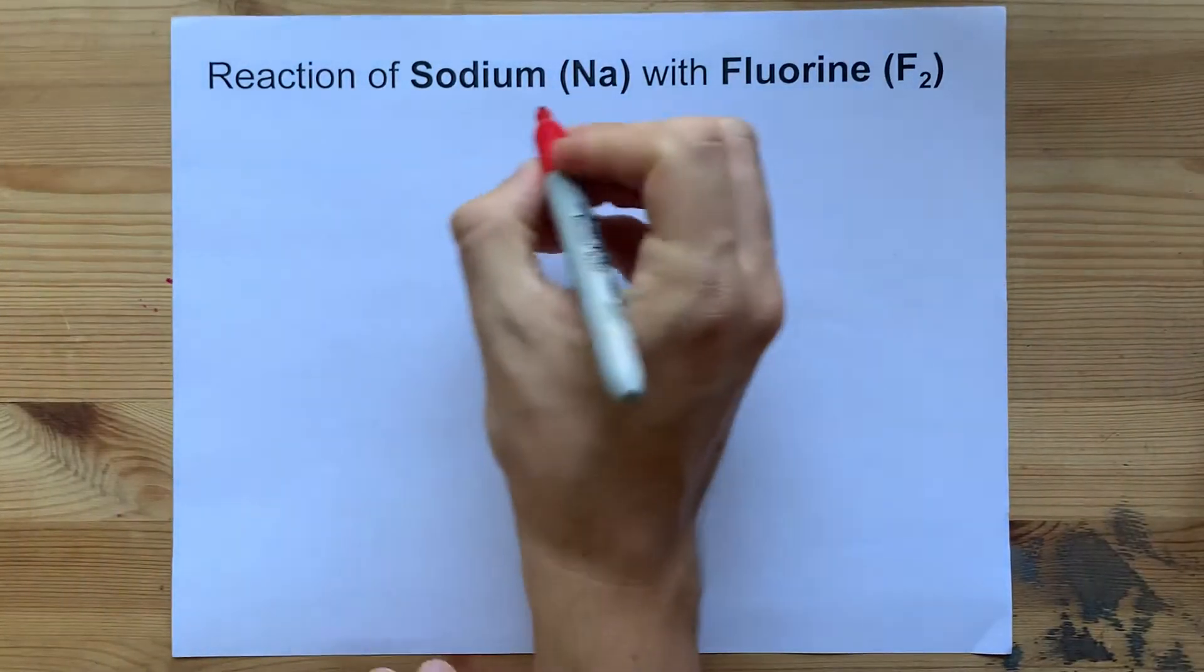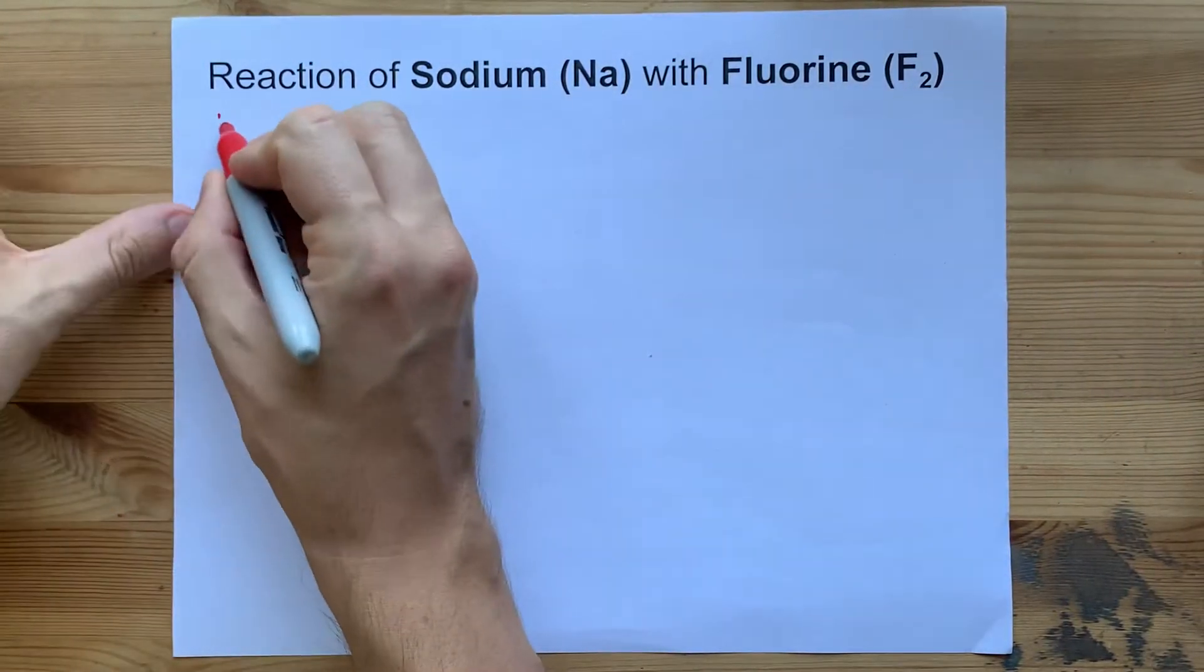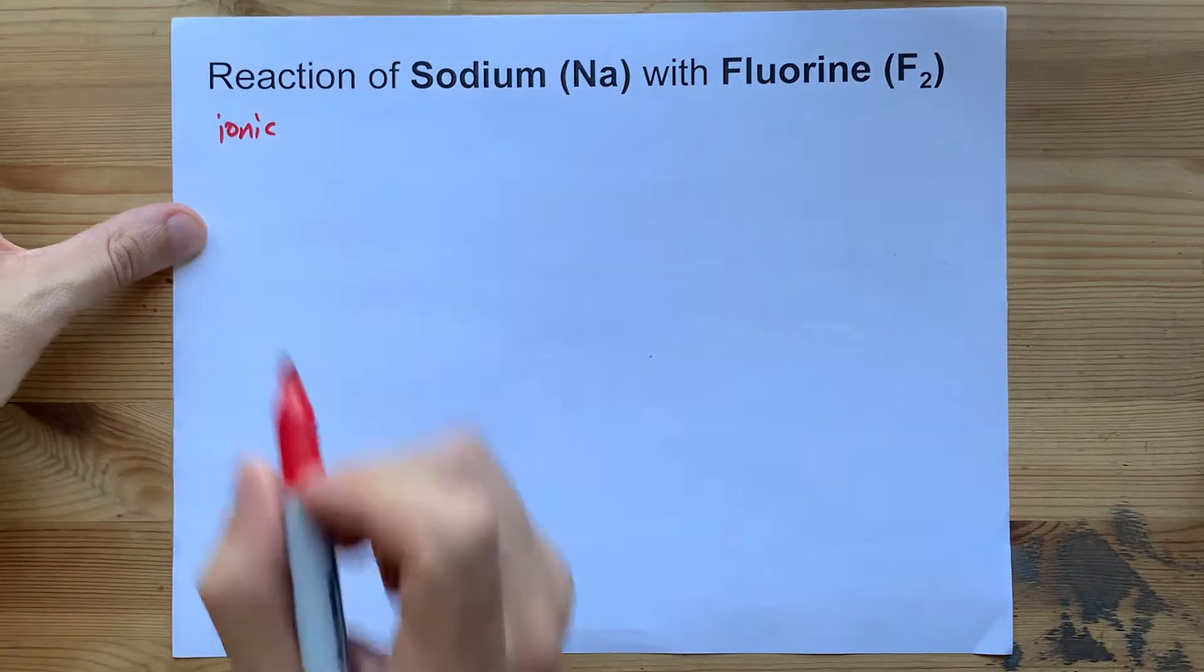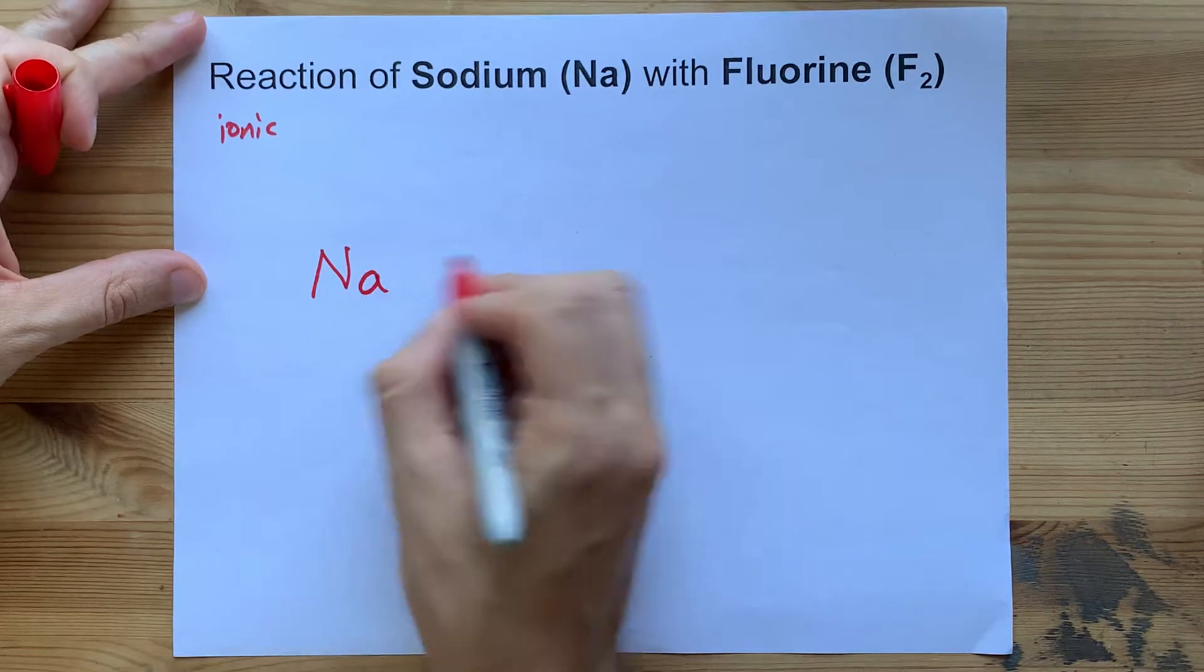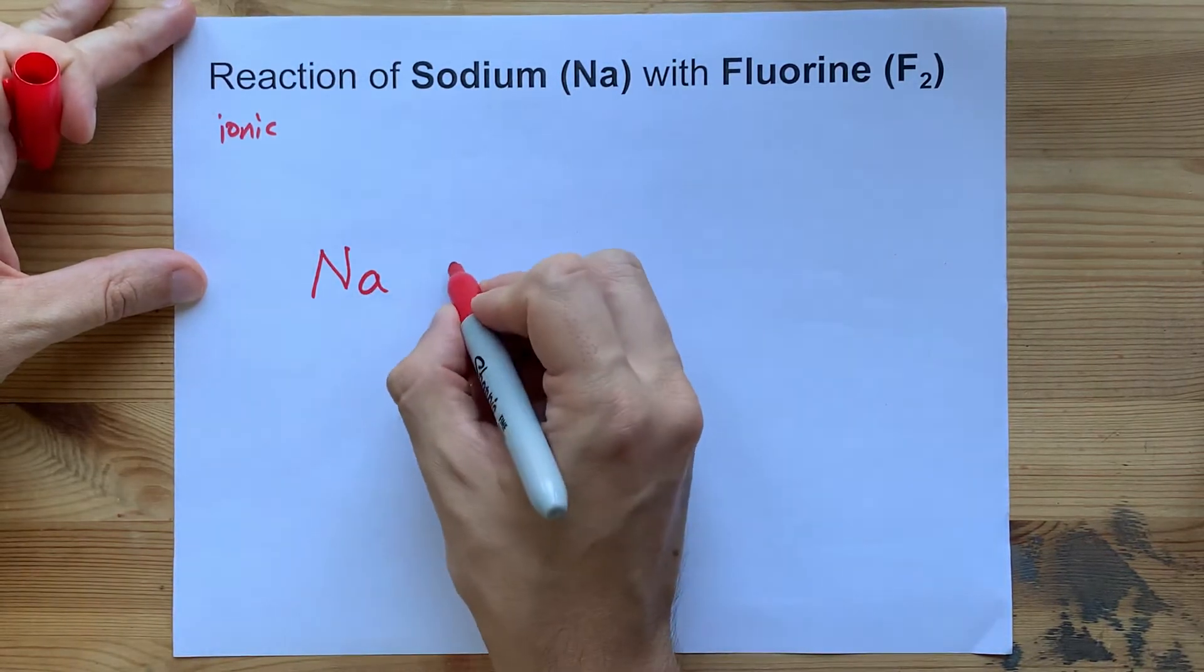When metals and non-metals react together, they form ionic compounds, and this is a synthesis reaction where the metal gives away electrons to the non-metal.